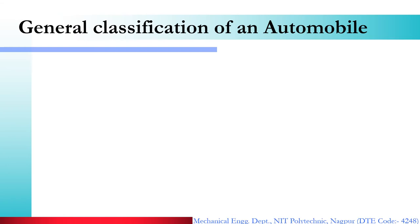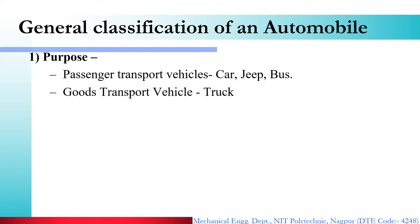Now, the general classification of automobiles. Automobiles can be classified on a lot of criteria and bases. There are some major classifications we will cover in this video lecture. The first classification is based on the purpose for which automobiles are used. We can classify automobiles into two types: passenger transport vehicles and goods transport vehicles.